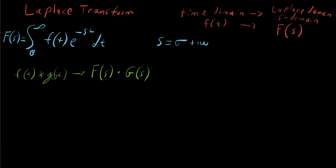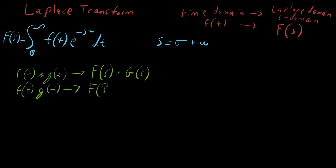This idea is symmetric. Convolution in the time domain is multiplication in the Laplace domain, and similarly, multiplication in the time domain — f of T times g of T — is actually convolution in the Laplace domain. So if you want to avoid a convolution, multiply first in the time domain and then transform the output to get your convolved functions in the Laplace domain. It is a symmetric operation.